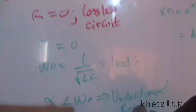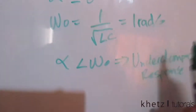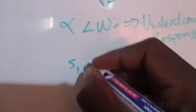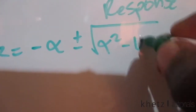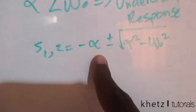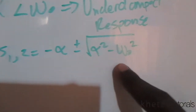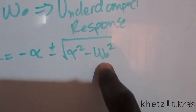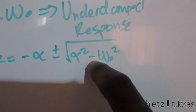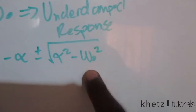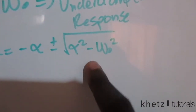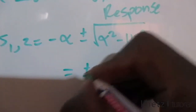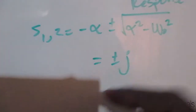S1 and S2 are given by: −α ± √(α² − ω₀²). Substituting alpha = 0 and ω₀ = 1, we get ±√(−1²), which equals ±√(−1). The square root of negative one is j, so our roots are S1, S2 = ±j in complex form.